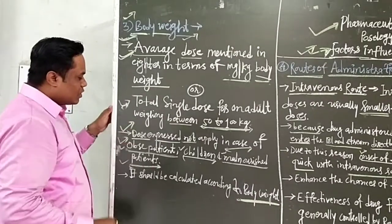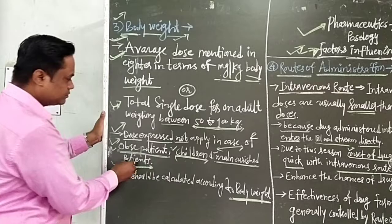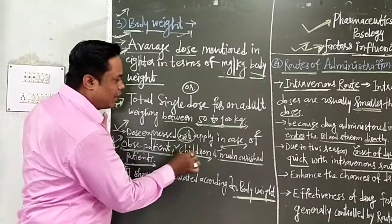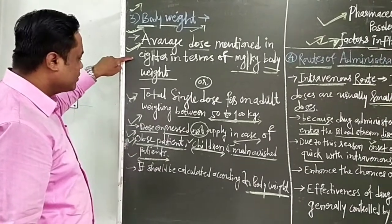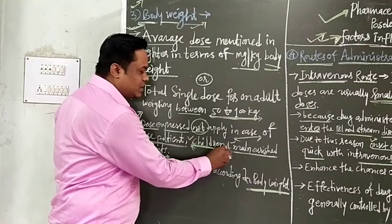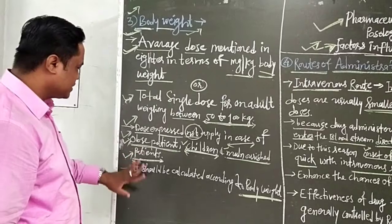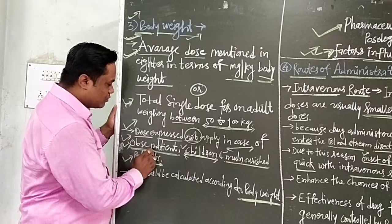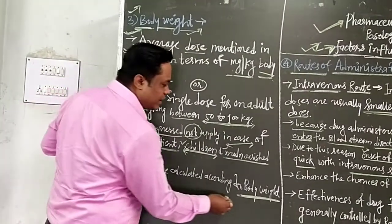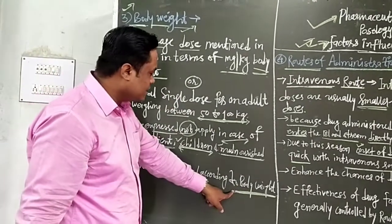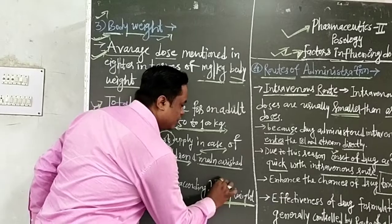However, in case of obese patients, children, or malnourished patients, the standard dose expressed in mg per kg is not directly applied. For obese patients the weight is higher than the standard average weight; for children the weight is very less; and for malnourished patients the weight varies. Therefore, these standards are not applied in such cases, and the dose should be calculated according to their individual body weight.